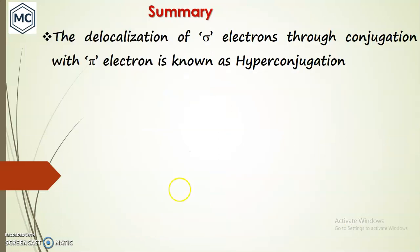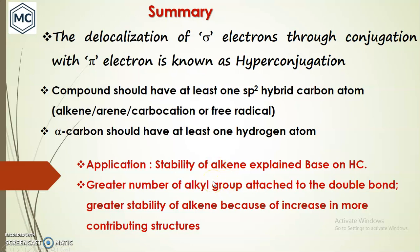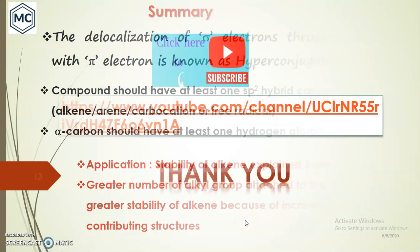In summary, hyperconjugation is the delocalization of sigma electrons through conjugation with pi electrons. The structural requirements are: a compound should have at least one sp2 hybridized carbon atom (alkene, alkyne, carbocation, or free radical), and the alpha carbon should have at least one alpha hydrogen atom. The application is that we can predict the stability of alkenes — greater number of alkyl groups attached to the double bond gives greater stability due to more contributing hyperconjugative structures.